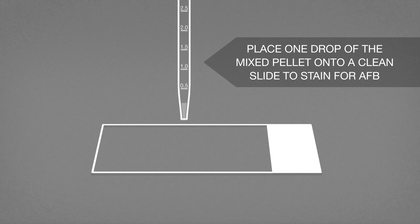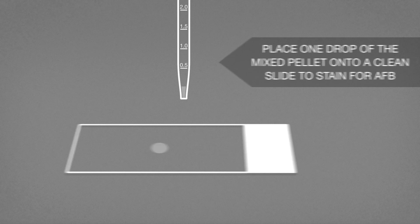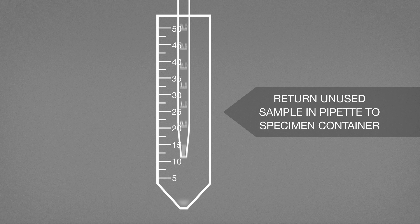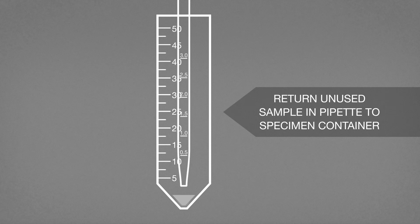Place one drop of the mixed pellet from the pipette onto a clean microscope slide to stain for acid-fast bacilli. Do not touch the slide with the pipette. Return the unused sample remaining in the pipette to the specimen container.